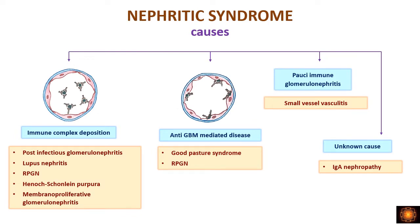Based on the causes, we have classified nephritic syndrome under immune complex deposition — conditions where immune complexes are formed elsewhere and deposited in the glomerular capillary wall. These include post-infectious glomerulonephritis, lupus nephritis, rapidly progressive glomerulonephritis, Henoch-Schönlein purpura, and membranoproliferative glomerulonephritis. Additionally, there are conditions where antigens are present within the glomerular capillary wall itself — anti-glomerular basement membrane mediated diseases, seen in Goodpasture's syndrome and some cases of rapidly progressive glomerulonephritis involving nephritogenic antigens.